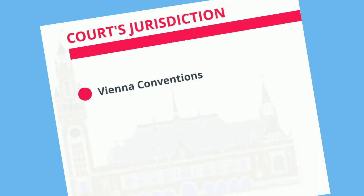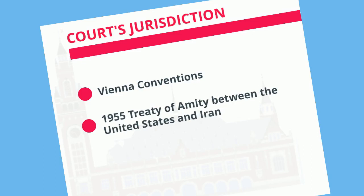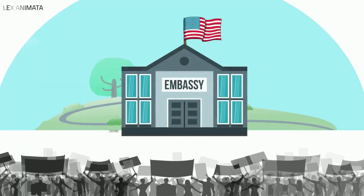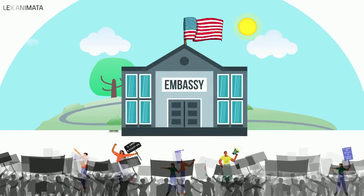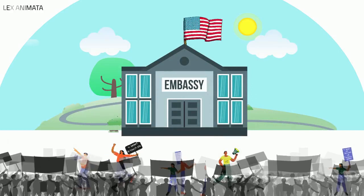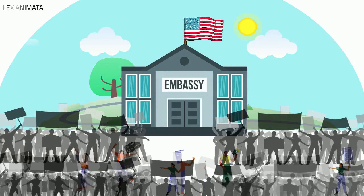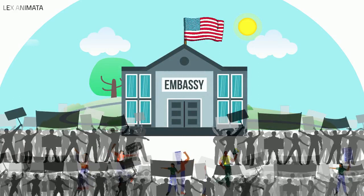On the merits, the court held that it had jurisdiction based on the Vienna Conventions and the 1955 Treaty of Amity between the United States and Iran. The court also held that the Iranian authorities' inability to secure the premises violated Iran's responsibilities under the two Vienna Conventions and the Bilateral Treaty of 1955.